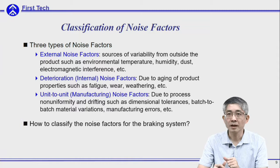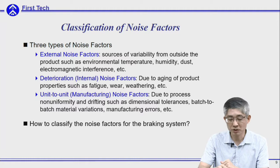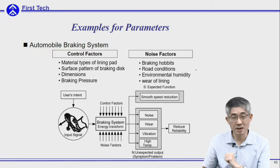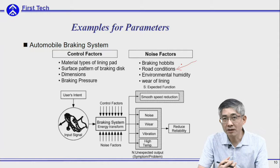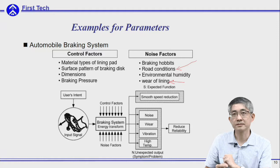Going back to the automobile braking system, you can try using it as an example. Road condition is something outside of the product — this is clearly an external noise factor. Wear of the lining pad is caused by using the part for a long time, causing worn-out of the lining pad — so this is called an internal noise factor. You can try applying these categories to other examples by yourself.